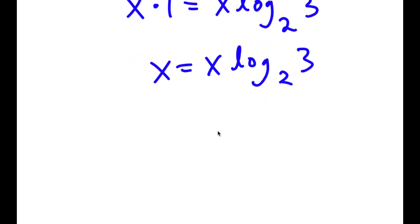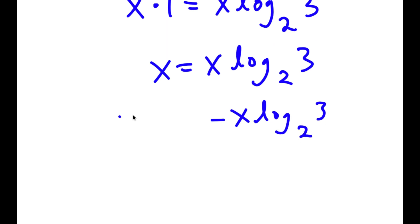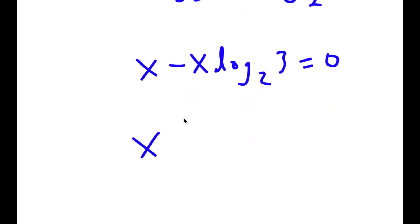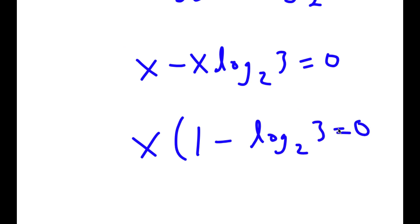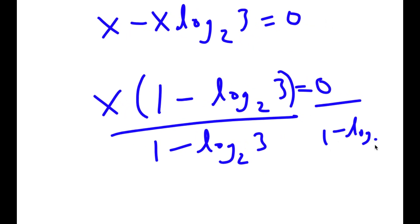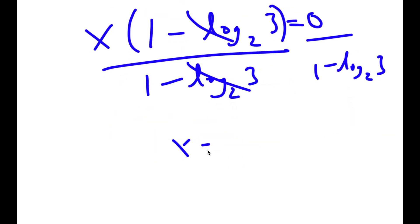Now, I'm going to subtract x times log base 2 of 3 from both sides. When these cancel, I get x minus x times log base 2 of 3 is equal to 0. If I factor out x, I get x times (1 minus log base 2 of 3) is equal to 0. And if I divide both sides by (1 minus log base 2 of 3), these two cancel out and I'm left with x is equal to 0.